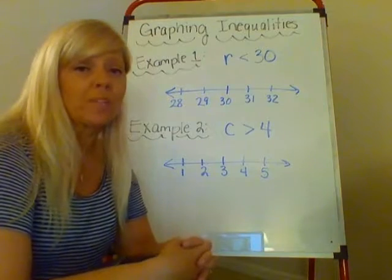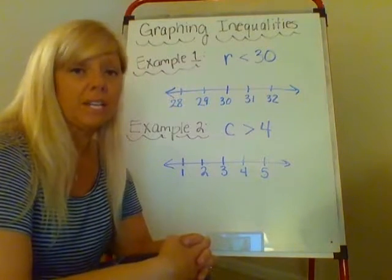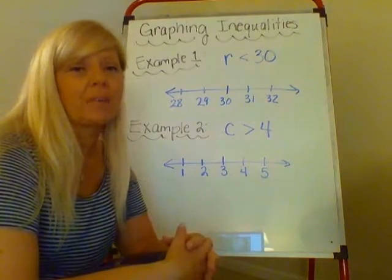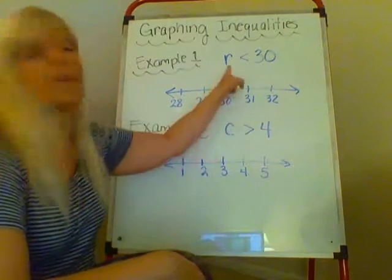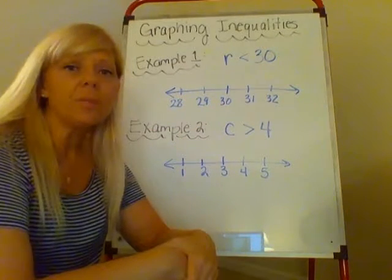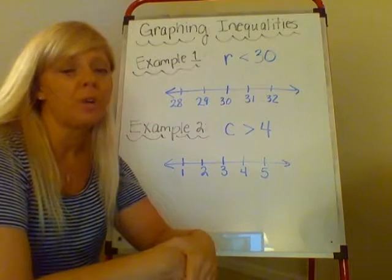So if I had r equals 30, r can only be 30 in that statement. But in this statement, r is less than 30, that means r could be any number of numbers that are less than 30.